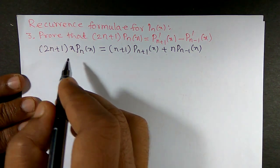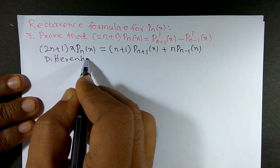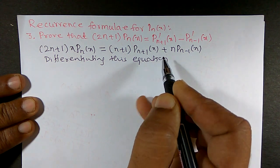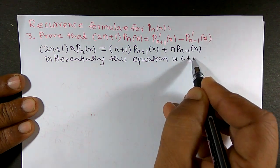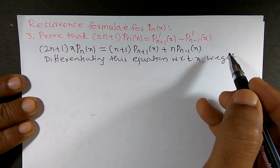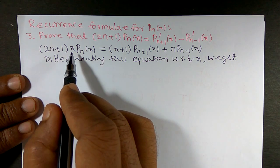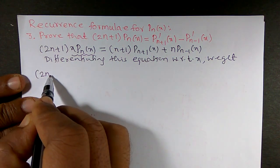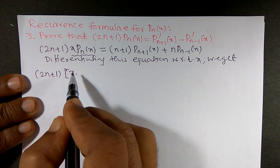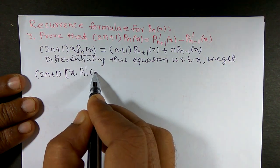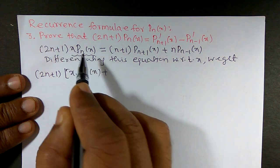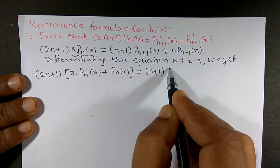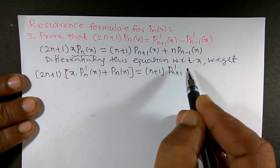Now I am going to differentiate this equation with respect to x. On the left side, (2n+1) is constant, so we differentiate x · Pₙ(x) using the product rule: keep x as it is times the derivative of Pₙ(x), plus Pₙ(x) times the derivative of x with respect to x, which is 1.